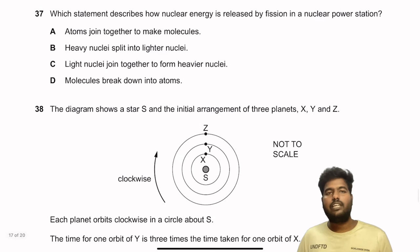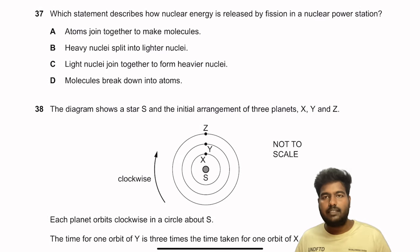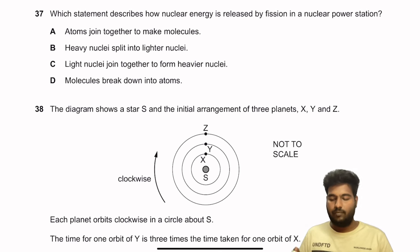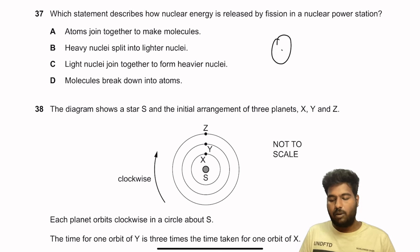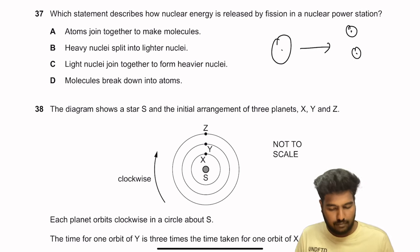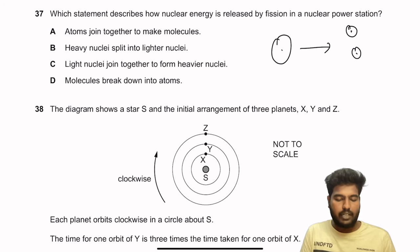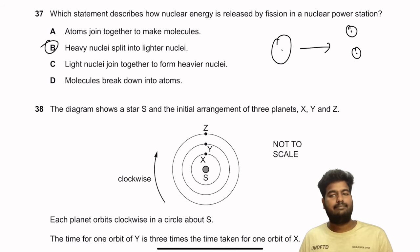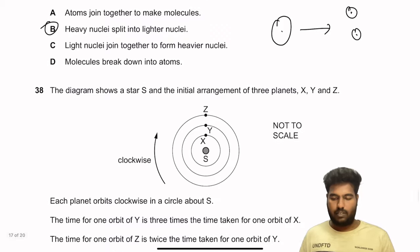Question 37: Which statement describes how nuclear energy is released by fission in a nuclear power station? Nuclear fission is the splitting of a heavy nucleus into two smaller nuclei. So the answer is: heavy nuclei split into lighter nuclei — option B.